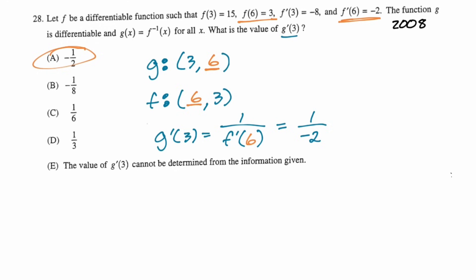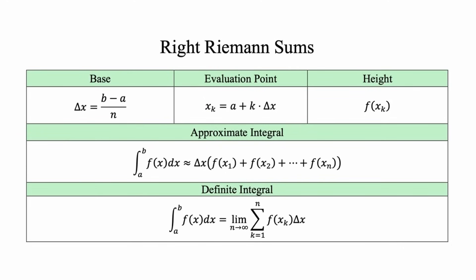The next topic my students are still messing up a bit is Riemann sums. The base is delta x, which is b minus a over n, and evaluation points x sub k — sometimes written x sub star — is a plus k times delta x. The height of the rectangle is f of x sub k, so to approximate the integral it's delta x times the sum of f of x1, f of x2, up to f of xn. To find the actual value of the definite integral, it's the limit as n approaches infinity of the sum from one to n of f of x sub k times delta x. Sometimes they write it out as a summation.